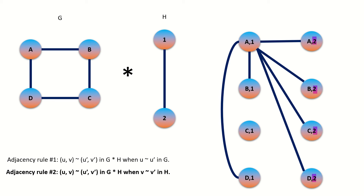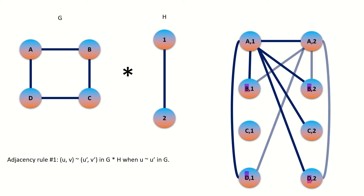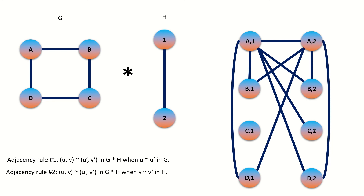By the first adjacency rule, vertex A2 connects to all vertices with left entry adjacent to vertex A in graph G — that means vertices whose letter is B or D. By the second adjacency rule, vertex A2 connects to all vertices whose right entries are adjacent to vertex 2 in graph H. Since vertex 1 is adjacent to vertex 2 in graph H, vertex A2 is adjacent to all vertices whose number is 1.